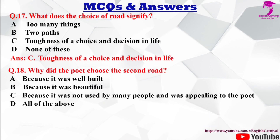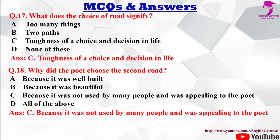Question number 18: Why did the poet choose the second road? Options: A) because it was well built, B) because it was beautiful, C) because it was not used by many people and was appealing to the poet, D) all of the above. The correct answer is C — because it was not used by many people and was appealing to the poet.